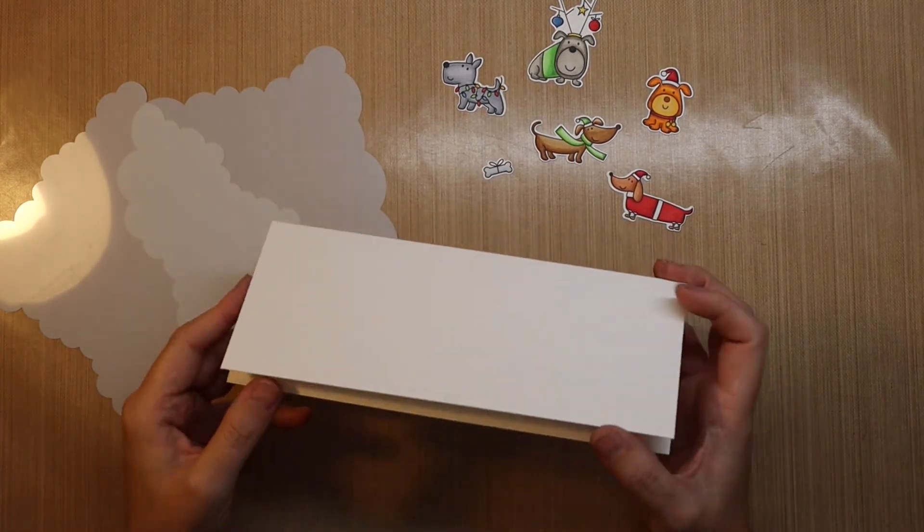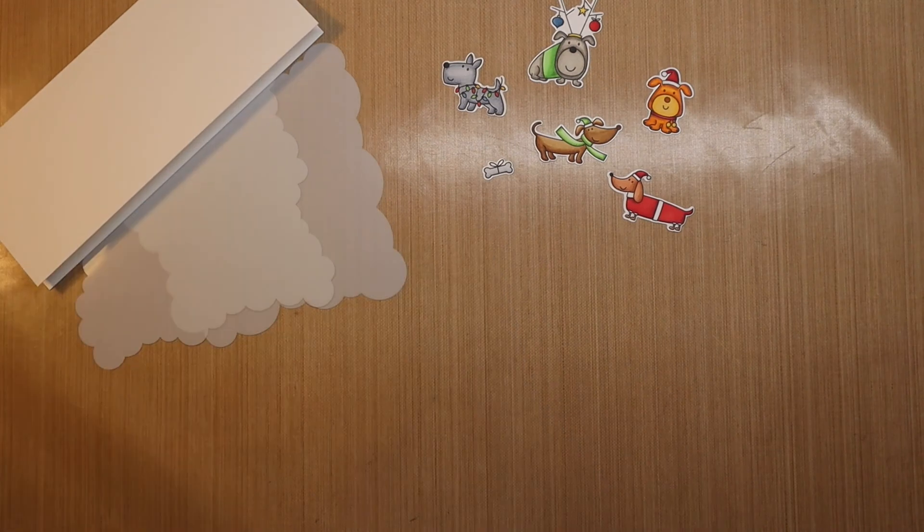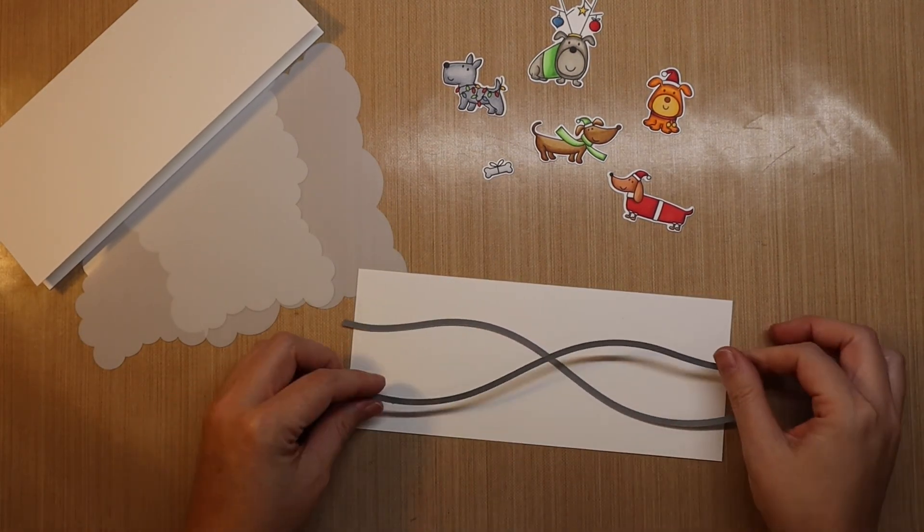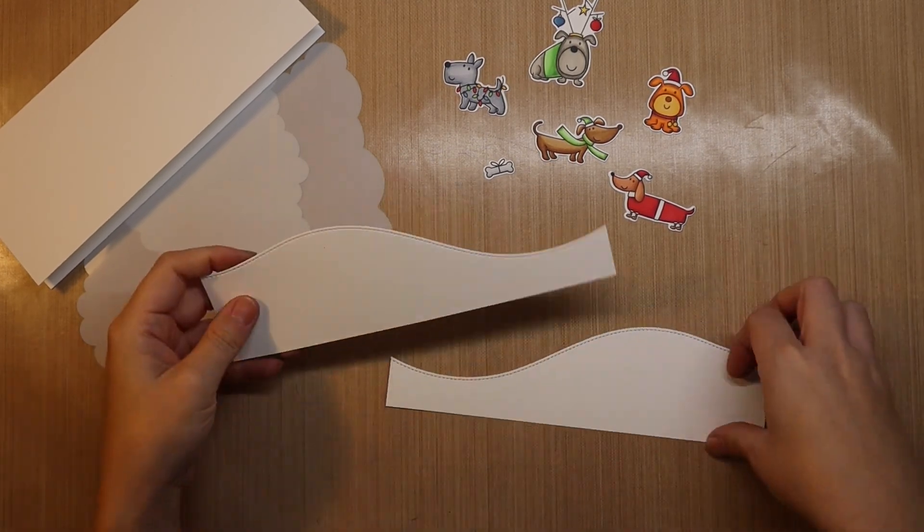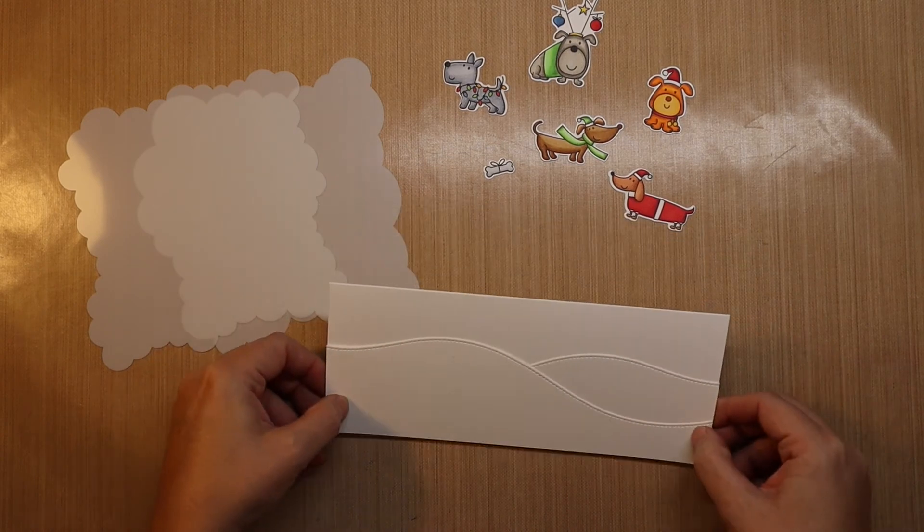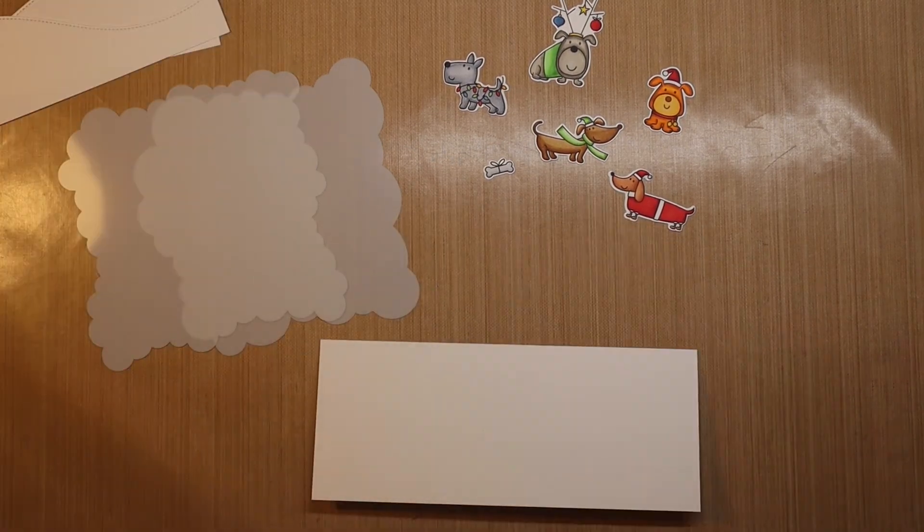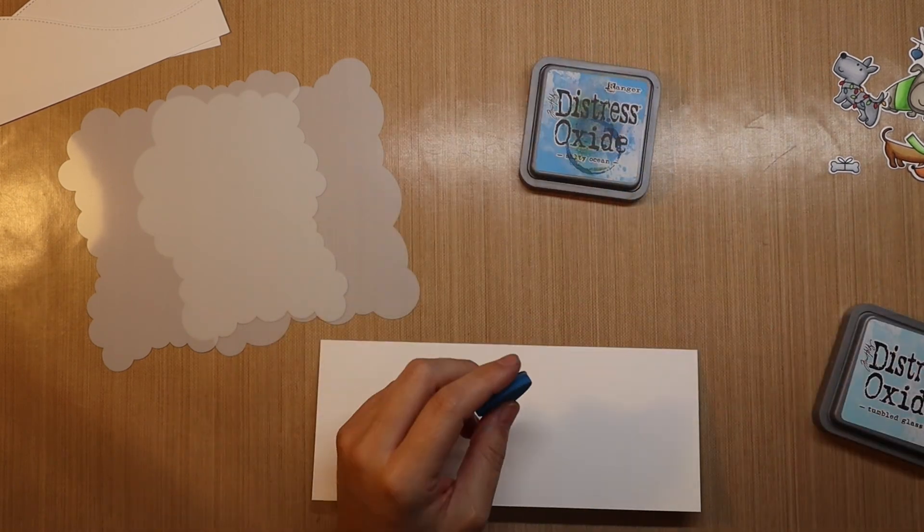I have already stamped and colored some images from My Favorite Things Deck the Howls stamp set colored with Copic markers. And then I use the coordinating dies to cut these out. And I also cut out some hills from Lawn Fawn slimline stitched hillside borders. I'm going to use these to make a slimline card scene.